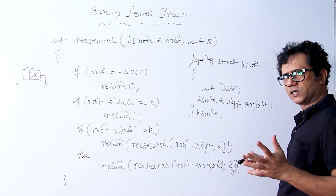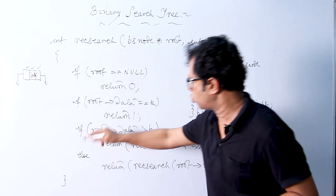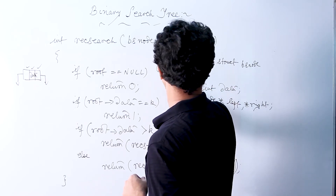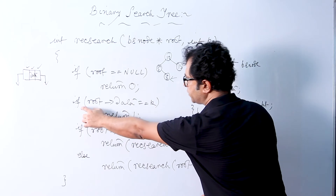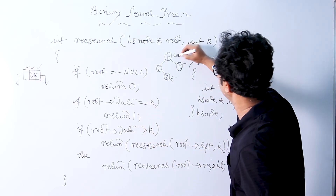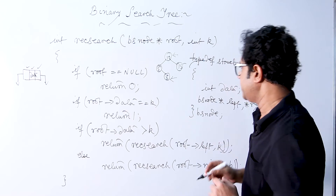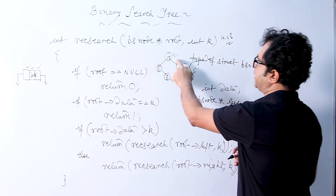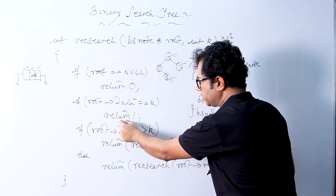After that, if the binary search tree has at least one node, we perform the rest of the code. Suppose we have the BST with values 10, 5, 8, 15, and we are searching for 8. If root->data equals k — the root data is not equal to k here since this is 10 and k is 8 — we will not return 1. We then compare root->data and k to see whether the values match.